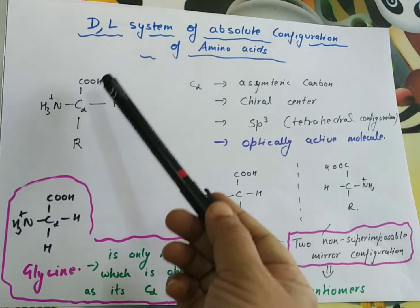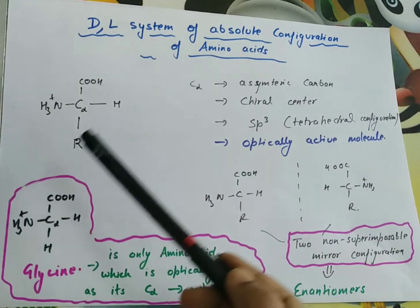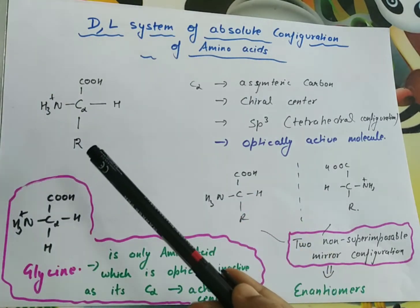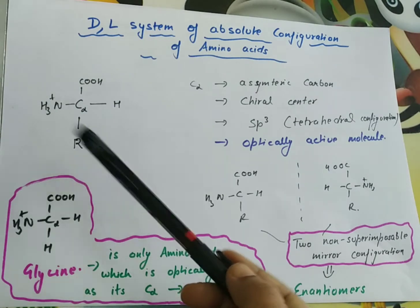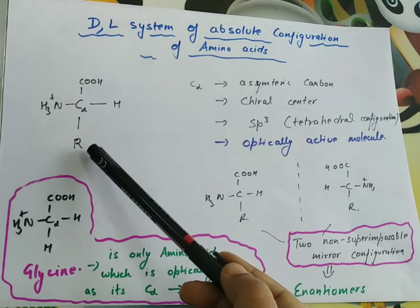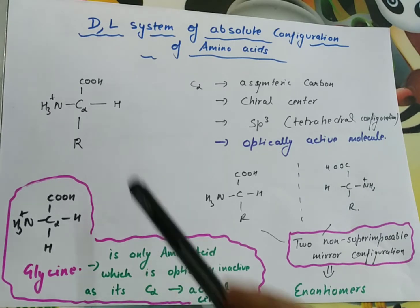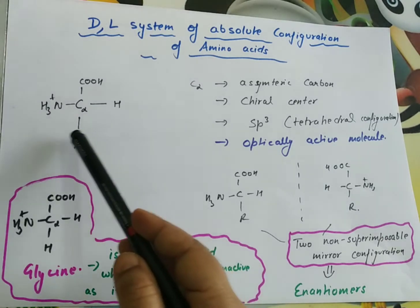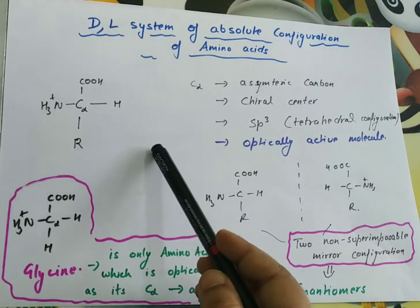Those four groups are: first, a carboxyl group; second, an amino group; third, a hydrogen; and lastly, an R group. The R group can vary depending on its size, electric charge, and shape. These 20 basic amino acids have 20 different R groups.